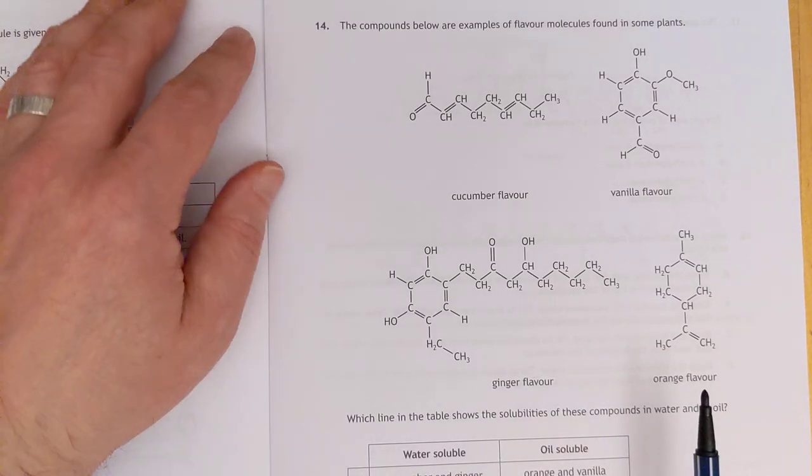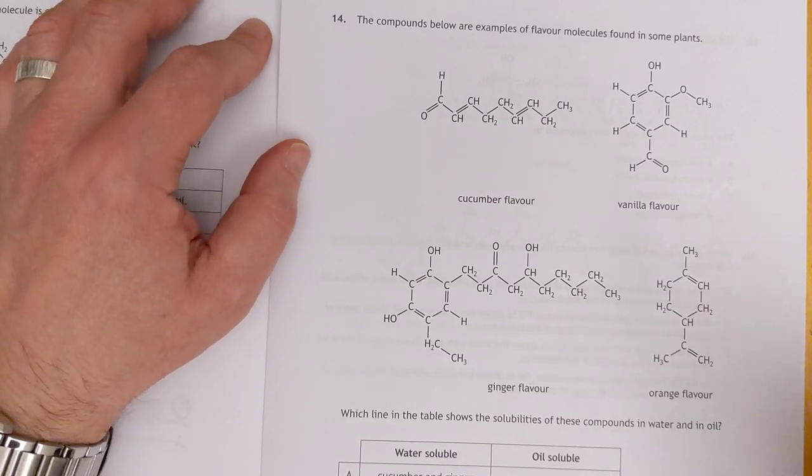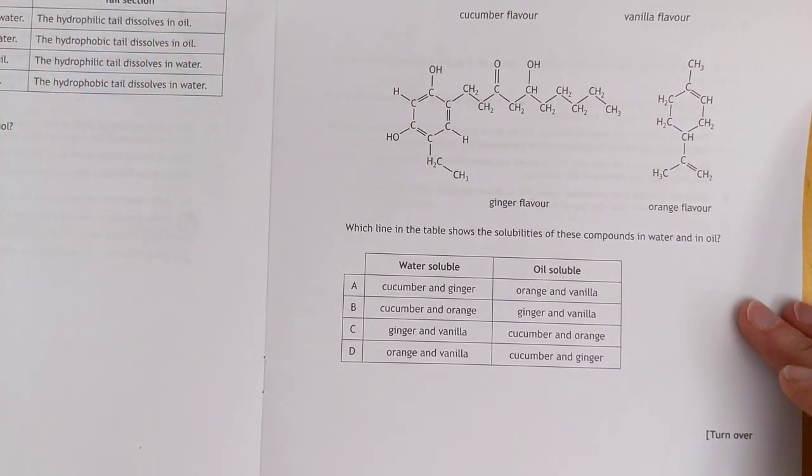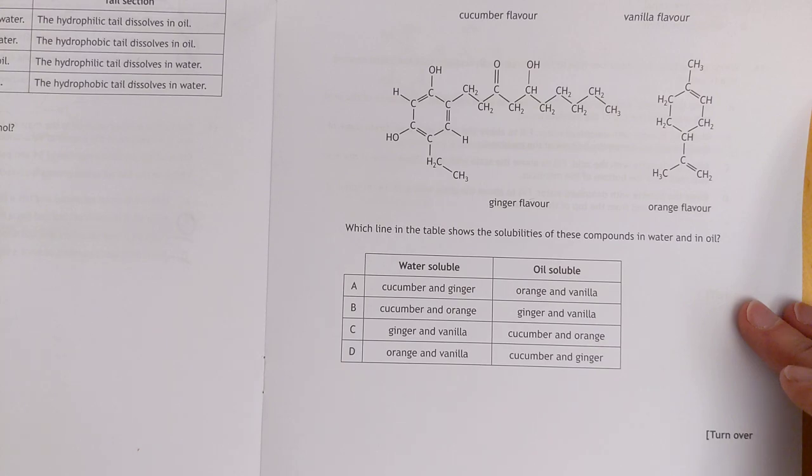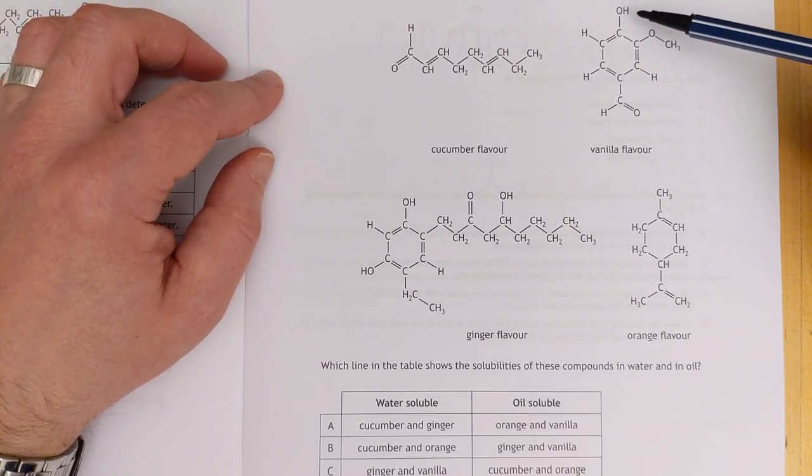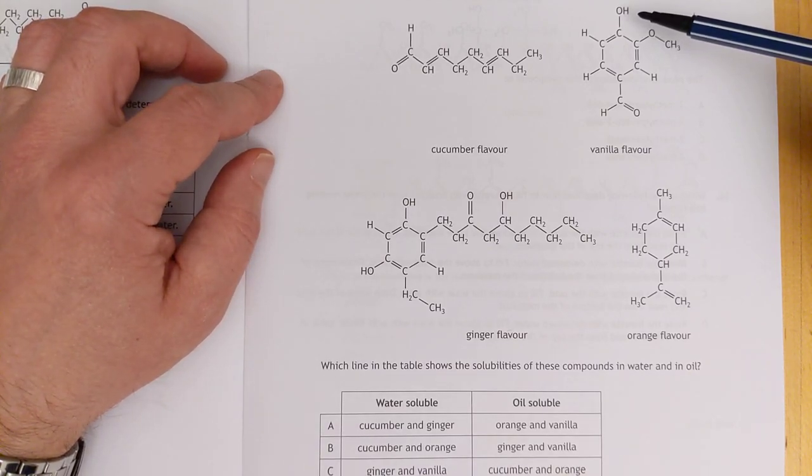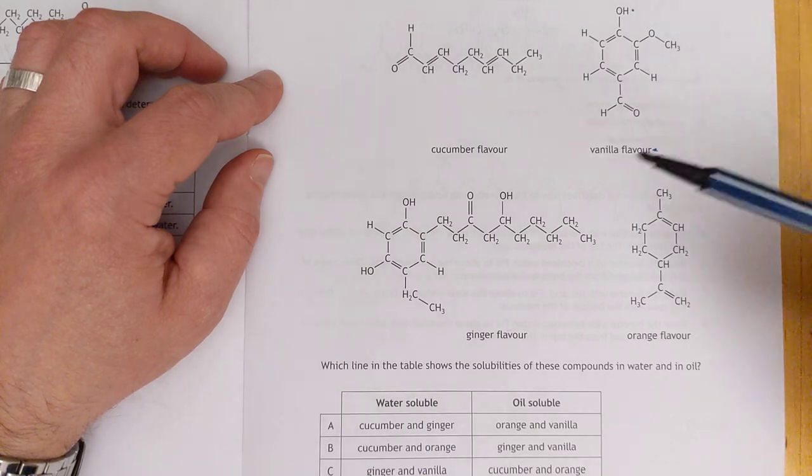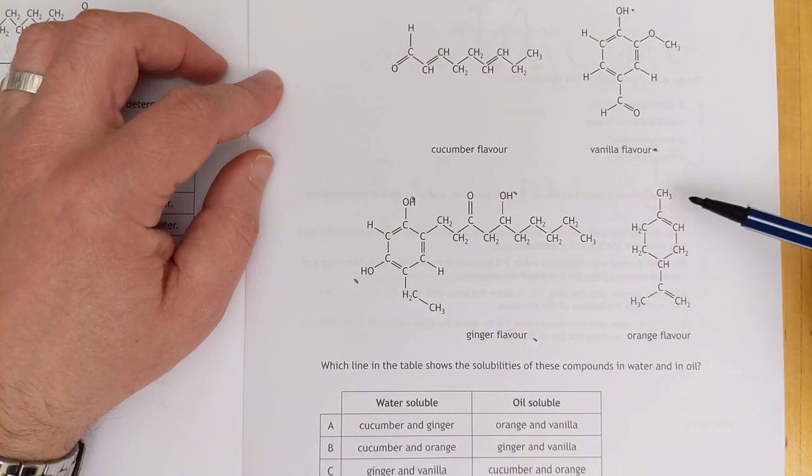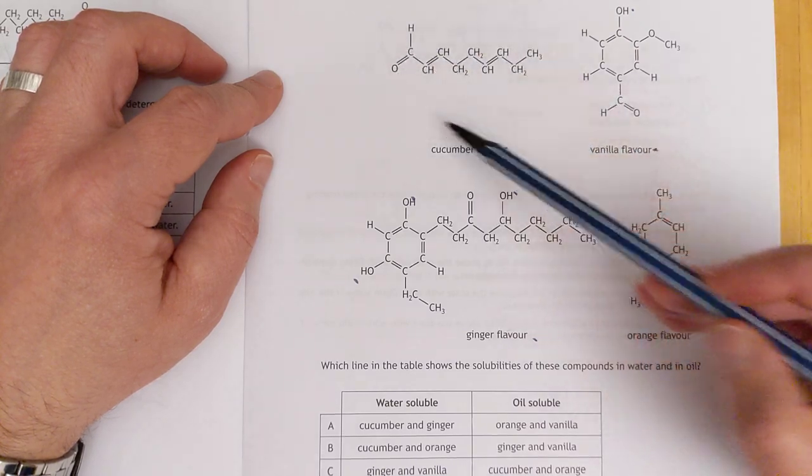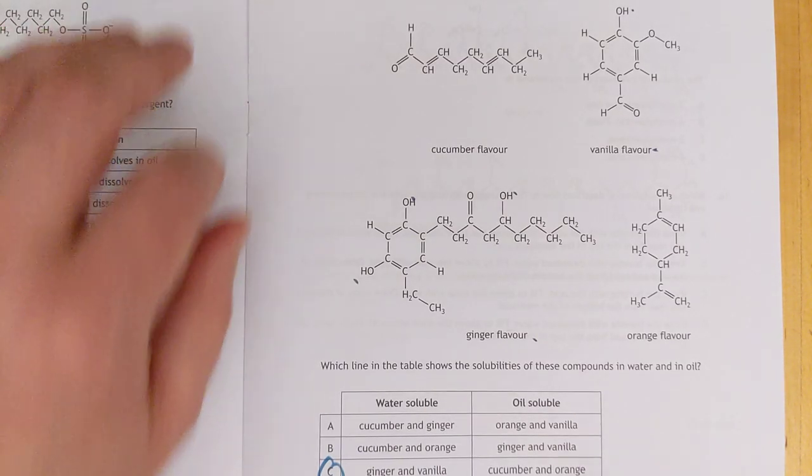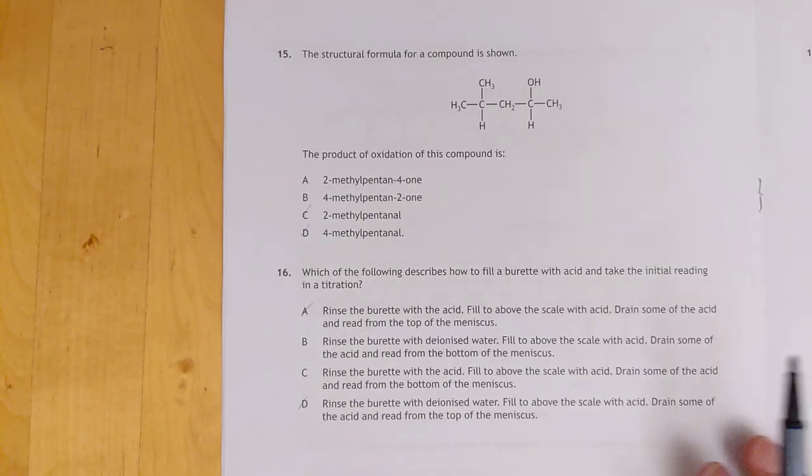Number fourteen. The compounds below are examples of flavor molecules found in some plants. Which line in the table shows the solubilities of these compounds in water and in oil? Solubility is based on the presence of hydroxyl groups, which makes it more soluble in water. I'm seeing a hydroxyl group here for vanilla and three hydroxyls for ginger. And these ones have none. That looks like a terpene. I'm going to say vanilla and ginger are soluble in water. So I'm going to go with C. Wasn't as much work as it looked, that one.